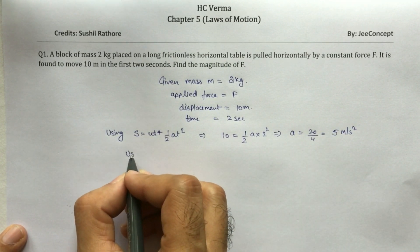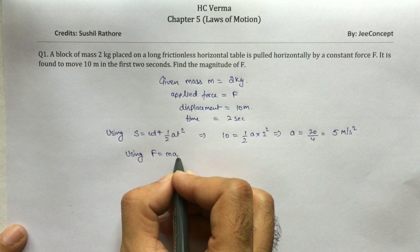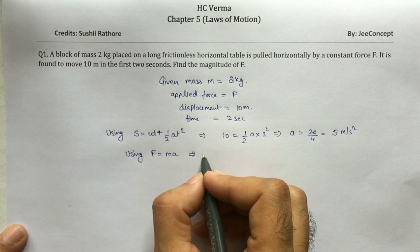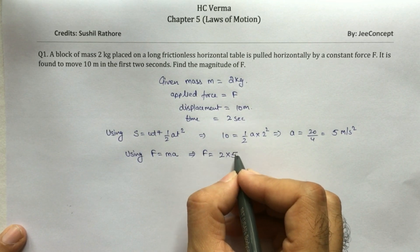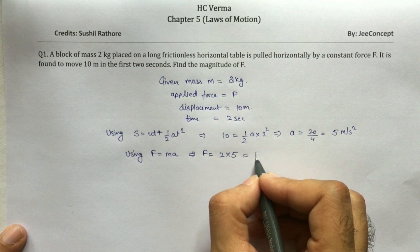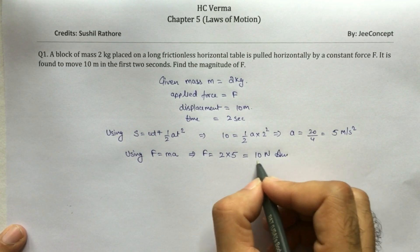Okay. Now using the formula F equals mass into acceleration, we can simply calculate this force. F equals 2 times 5, which equals 10 Newtons. So this is the solution of this problem.